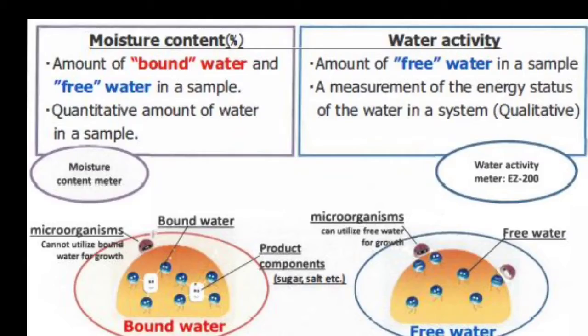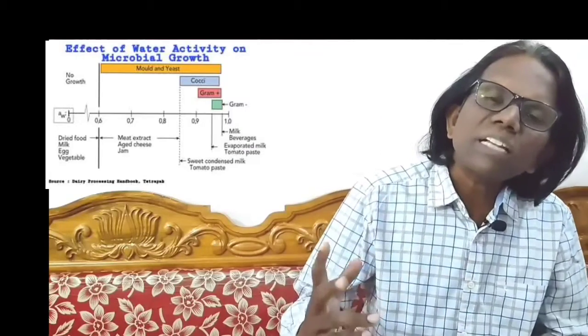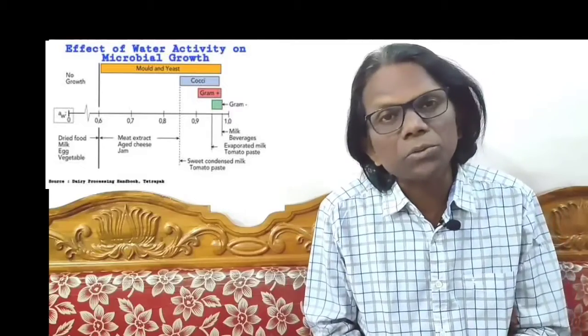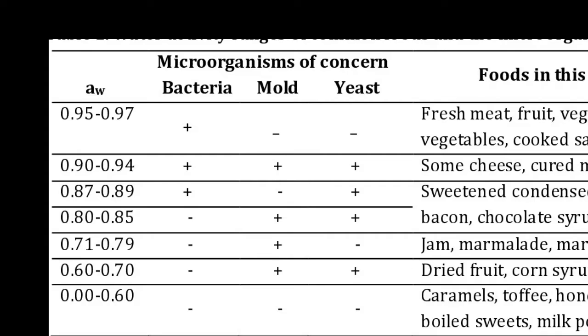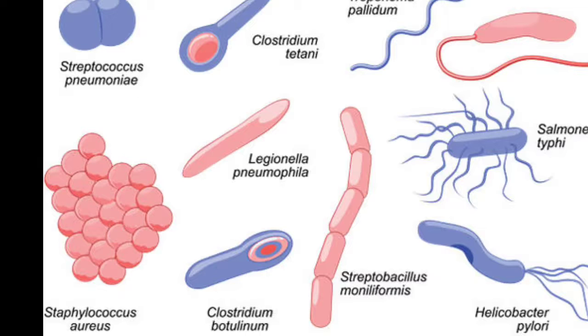Water activity is the free moisture available for microbial growth. Food products above 50% moisture content are prone to microbial growth. Whereas water activity above 0.9 is prone to microbial growth. Water activity above 0.6 is prone to fungal growth. Even some bacteria like Staphylococcus or Salmonella can grow at a water activity of 0.85 or 0.83.